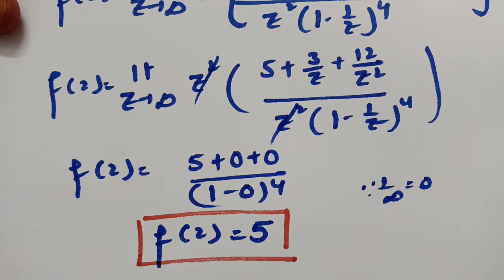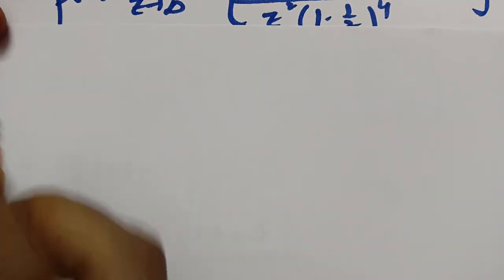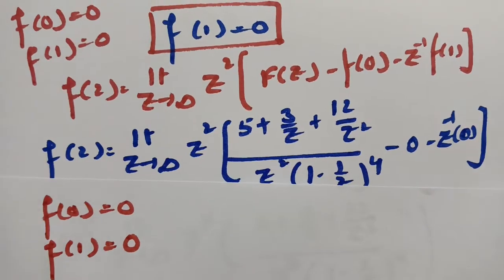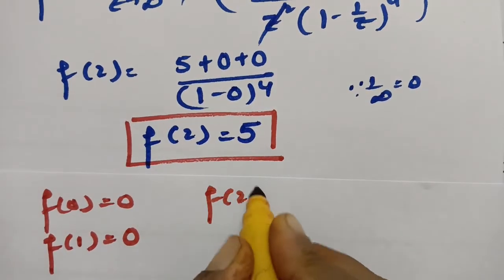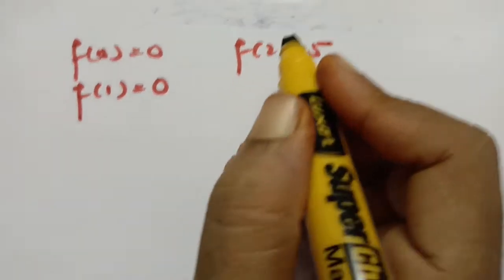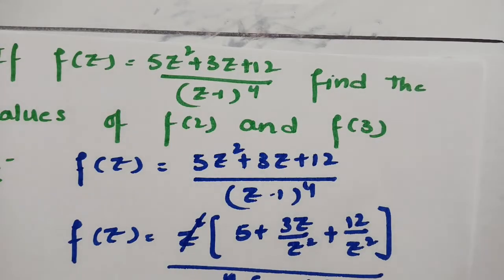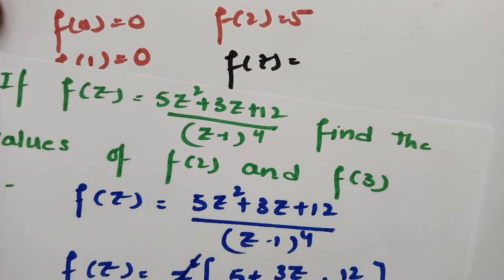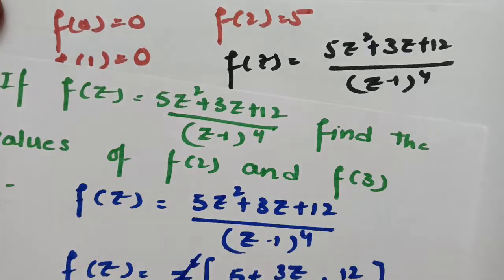Now find f(3). We know f(0) = 0, f(1) = 0, f(2) = 5, and F(z) = (5z² + 3z + 12) / (z − 1)⁴ from the question.